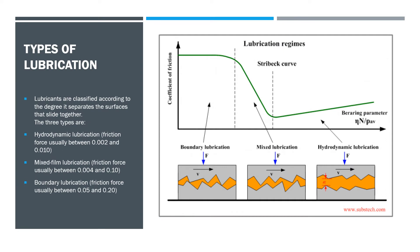Types of lubrication. Lubricants are classified according to the degree they separate the surfaces that slide together. There are three main types. The first is hydrodynamic lubrication, where surfaces are completely separated by fluid and no wear and tear occurs to the parts in the system. The space between the surfaces is usually 0.008 to 0.02 millimeters apart and the coefficient of friction is usually between 0.002 and 0.01.